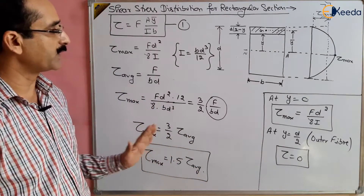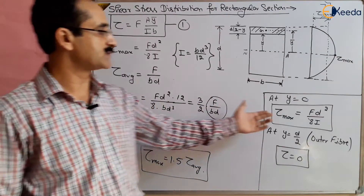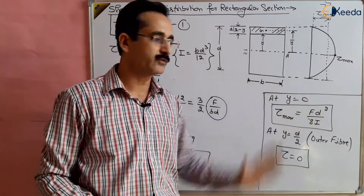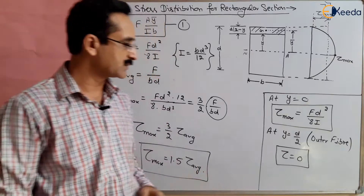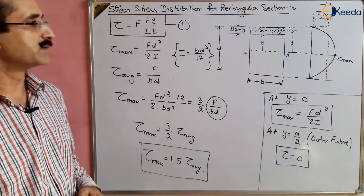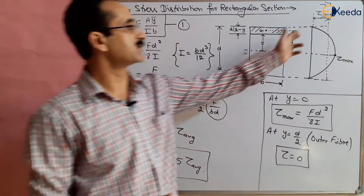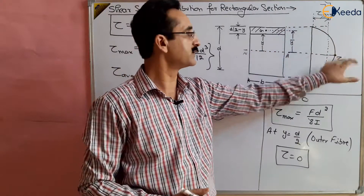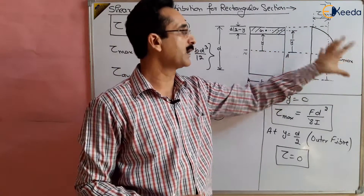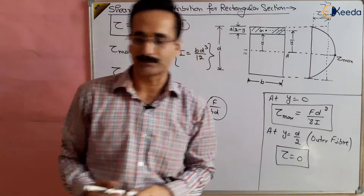We have obtained the relation between maximum shear stress and average shear stress, the value of maximum shear stress, and confirmed that the shear stress distribution in a rectangular section is parabolic.